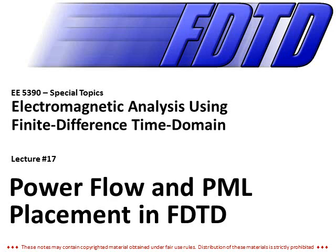We already talked a lot about in one-dimensional finite difference time domain how to calculate transmittance and reflectance. Things are a little bit more complicated when we go into two dimensions because waves can be traveling at different angles when they hit our transmission and reflection points where we're recording. There are also additional things to consider in terms of where we place the PML relative to our device, so we're going to talk about all that in this lecture.